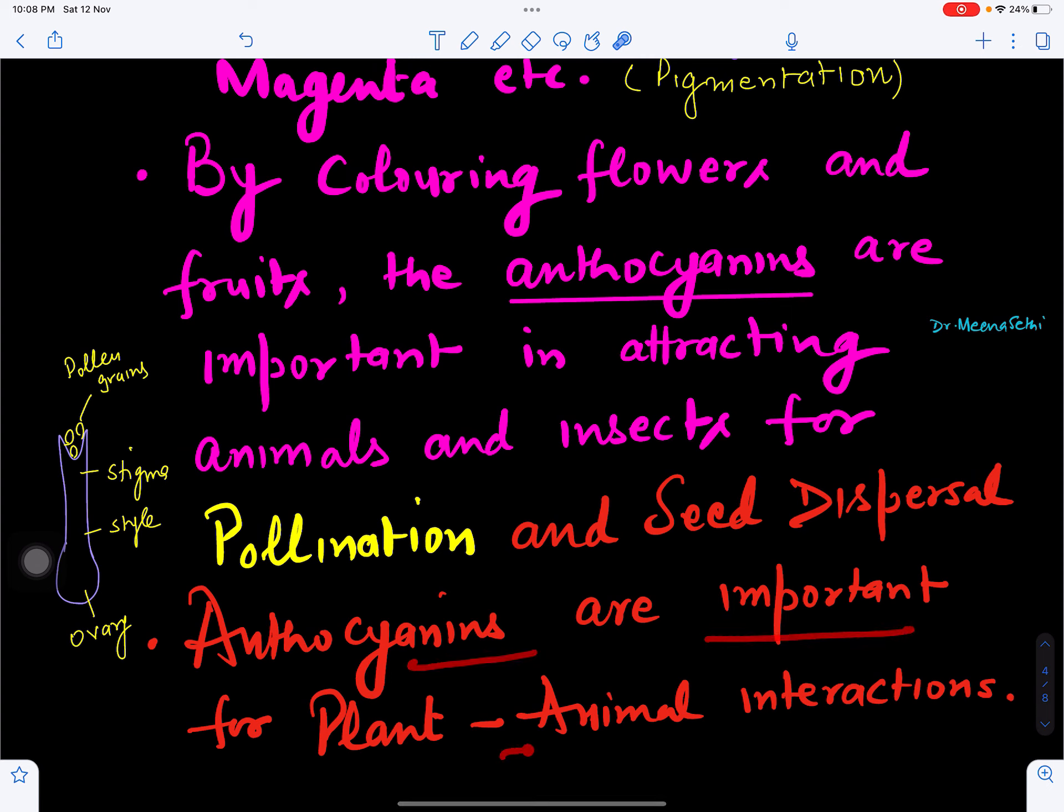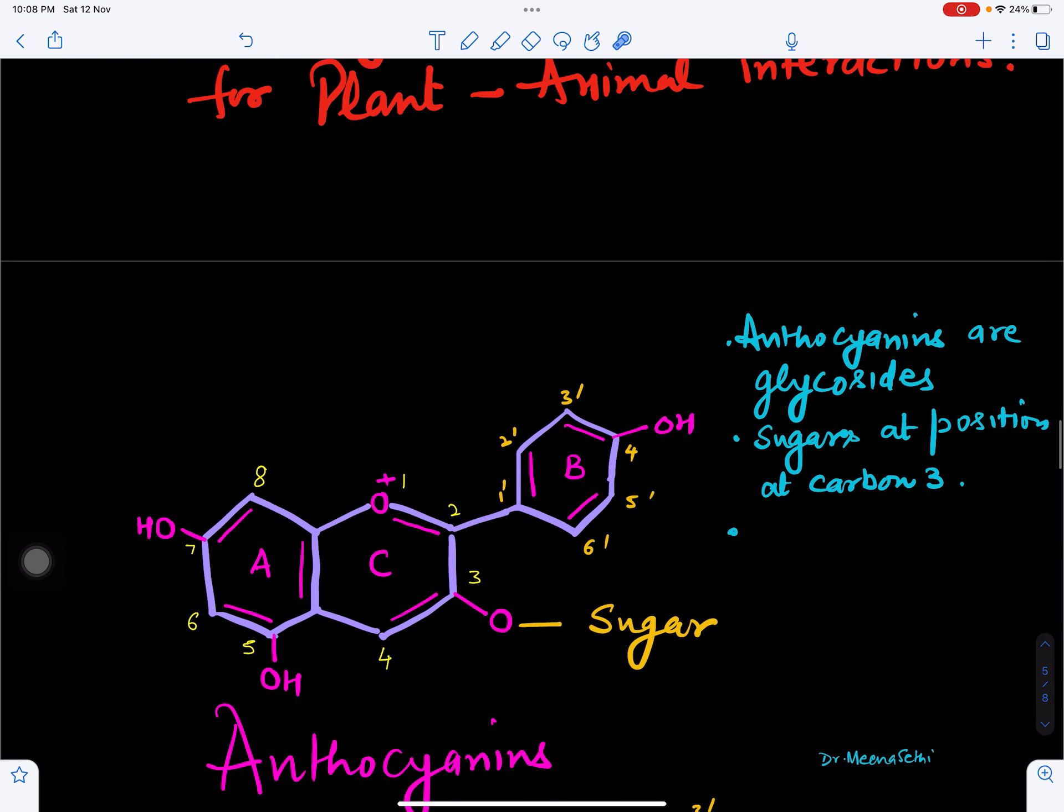So anthocyanin pigments are very important for plant-animal interaction because when they are attracted by color, they will visit that flower or fruit, and then this will help in interaction of plants and animals.